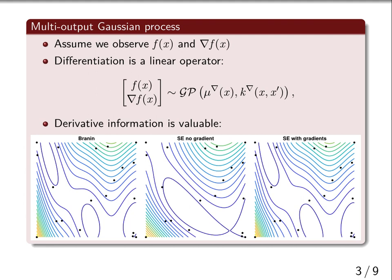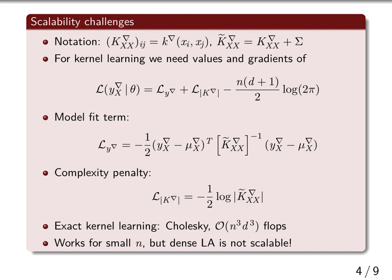In the empirical Bayes approach to kernel learning, we learn the hyperparameters theta by maximizing the log marginal likelihood of the data given the hyperparameters. We need to evaluate not only the model fit term, but also the complexity penalty. Naively, this requires dense matrix operations that cost over n³d³ flops, which isn't scalable.